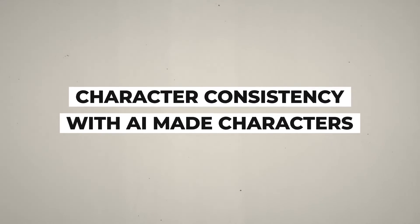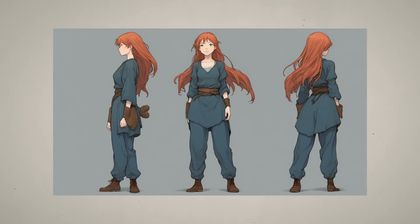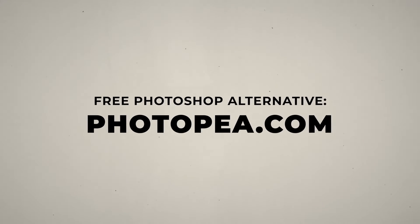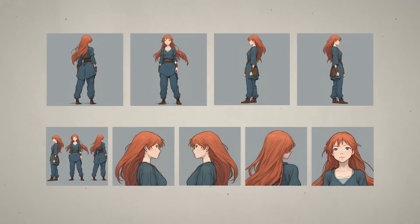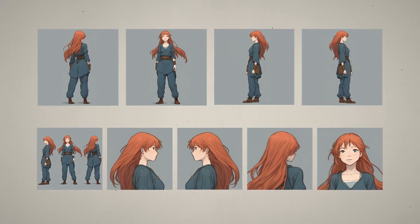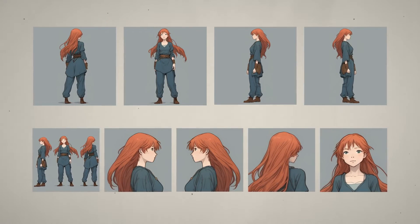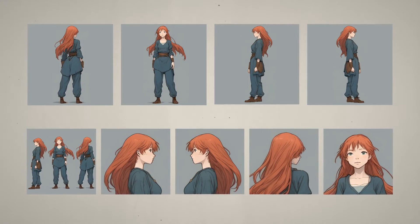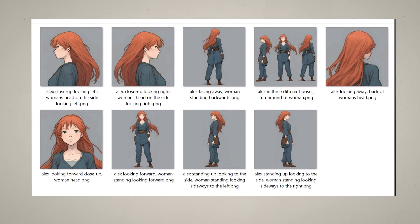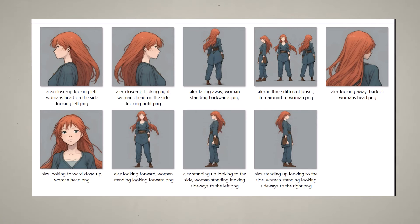Now let's do the same thing with a character I made using AI. I created this character in Midjourney. I took the original character sheet into Photoshop — or a free alternative called Photopea — and cut out the segments to create individual images. I've got 9 individual images: frontal pose, side poses, back pose, three poses together, close-up views of the face, side of the faces, and back of the head. I also did shortcuts — for the face looking right, I just flipped it and called it face looking left. I trained the model on just these 9 images, and I've labelled each image with a description of what's in it.